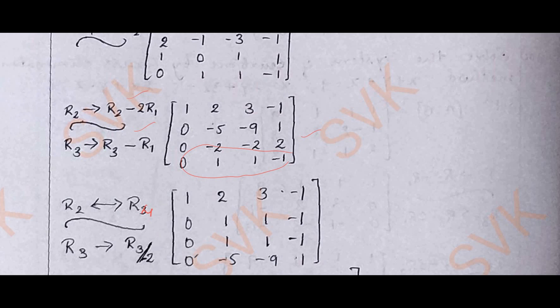We are going to get back with the second row as 0, 1, 1, minus 1. The fourth row as 0, minus 5, minus 9, 1.